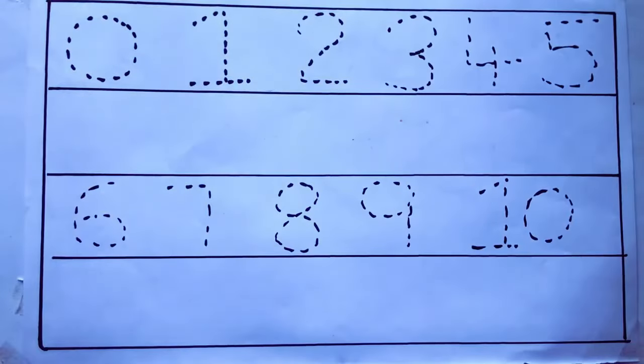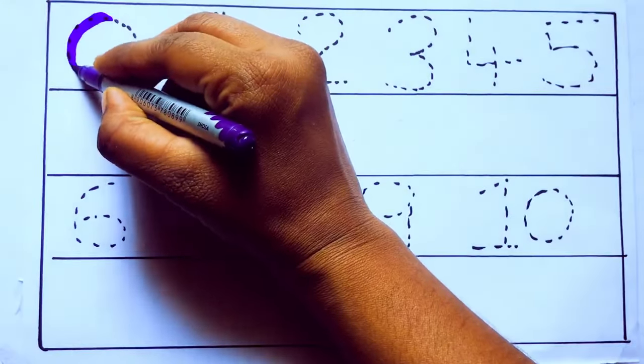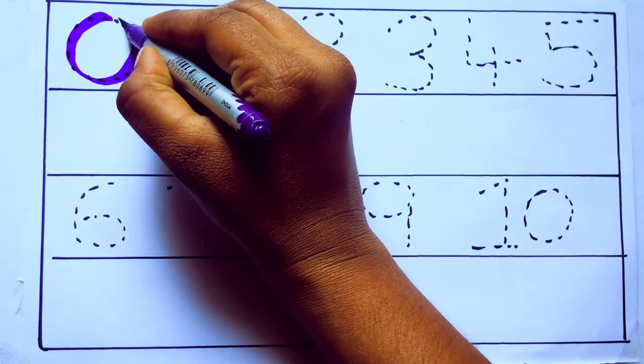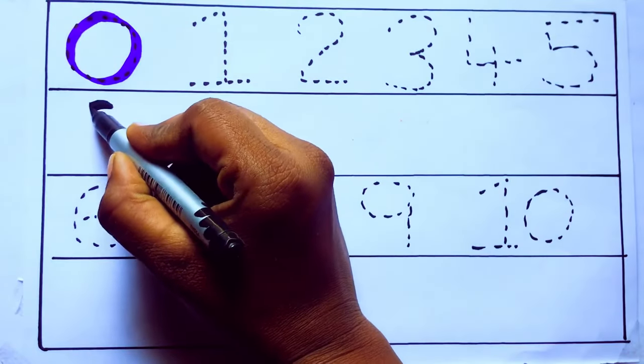Let's draw numbers. Violet color 0, Z-E-R-O, 1, 0, 0.